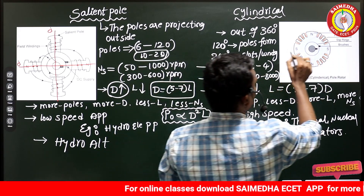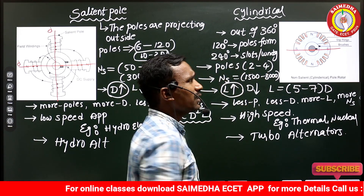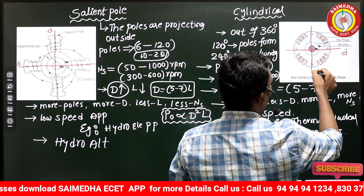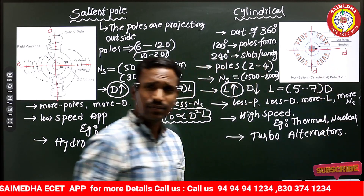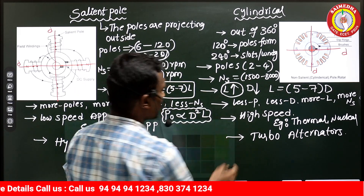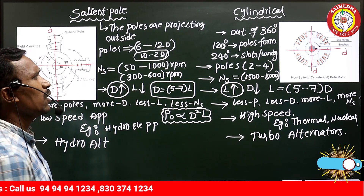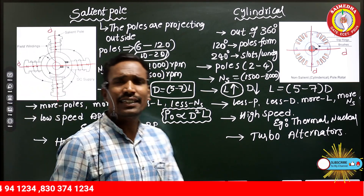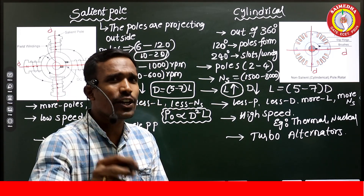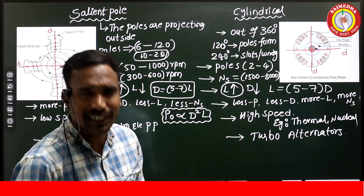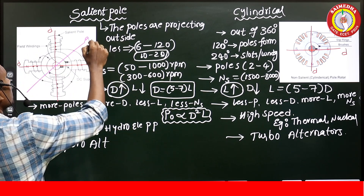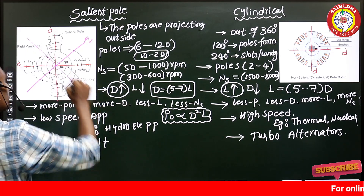This axis is called the d-axis as well, and these are all d-axes. Where is the q-axis? The q-axis is in quadrature with the d-axis — the phase shift between the d-axis and q-axis is 90 degrees. So this is my q-axis, and this is my q-axis.